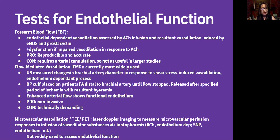Flow-mediated vasodilation (FMD) is currently the most widely used test. It uses ultrasound to measure changes in brachial artery diameter in response to shear stress-induced vasodilation, which is an endothelium-dependent process. A blood pressure cuff on the forearm distal to the brachial artery stops flow, then is released after a specified period of ischemia, and the resultant hyperemia — enhanced arterial flow — shows functional endothelium. It's non-invasive but technically demanding depending on the operator's ultrasound expertise.